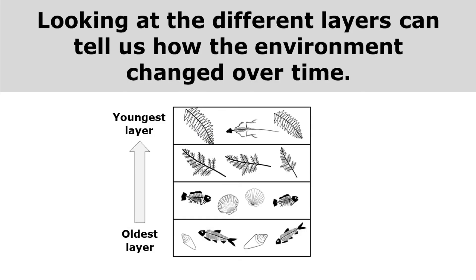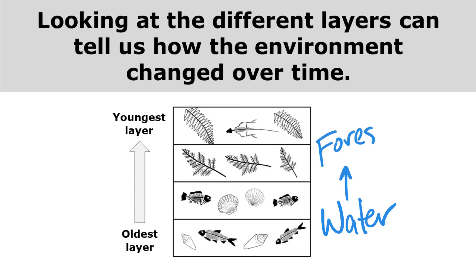Looking at the different layers can tell us how the environment changed over time. For example, I can see that this area started out covered in water, but eventually became a forest.